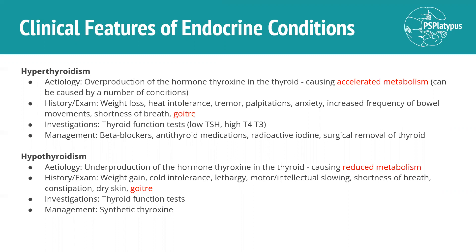The first condition is hyperthyroidism, and obviously there's hypothyroidism as well. Hyperthyroidism is the result of the overproduction of the hormone thyroxine in the thyroid, so you're getting accelerated metabolism. It can be caused by a number of different conditions. Basically all the symptoms are the result of an accelerated metabolism: weight loss, heat intolerance, tremor, palpitations, anxiety, increased frequency of bowel movements, shortness of breath, and goitre. Goitre is one of the characteristic findings you'd see in both hyper- and hypothyroidism.